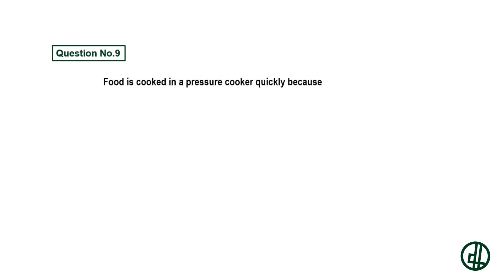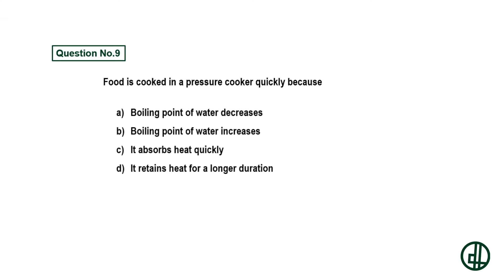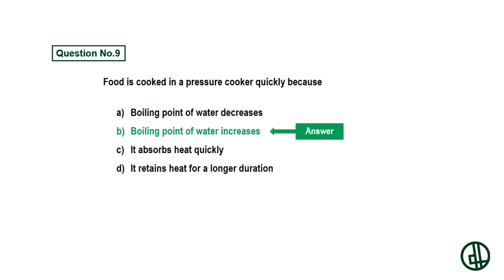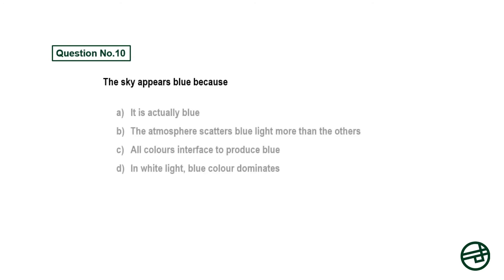Question number nine: Food is cooked in a pressure cooker quickly because — option A: boiling point of water decreases, option B: boiling point of water increases, option C: it absorbs heat quickly, option D: it retains heat for a longer duration. Answer is option B: boiling point of water increases.